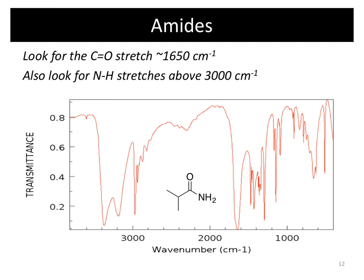If you have an amide, you still have your C=O stretch. But like an amine, you also have an NH2, so you should see two N-H stretches in that region. If you see that combination — two N-H peaks along with the carbonyl — that leads you to think you might have an amide functional group.